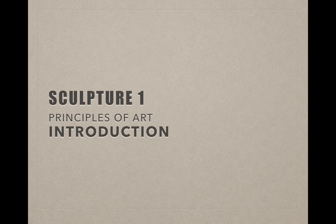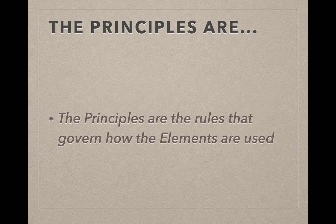In this video series, we're going to look at the principles of art and how they relate to sculpture. But first, let's start off with an introduction of what principles are. By definition, principles are the rules that govern how the elements are used. These are the ways that artists will put together the elements of art to create a piece, to make it stronger — governing the ways of limiting things so that it makes pieces stronger.